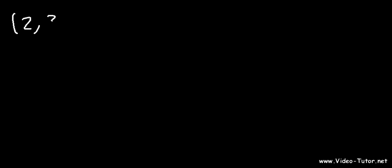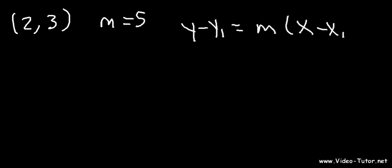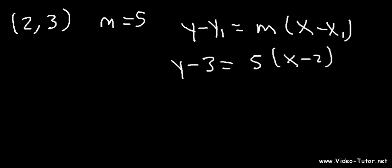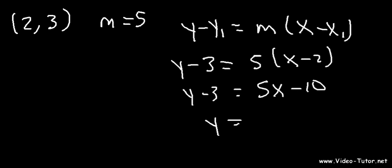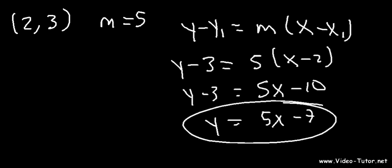So we have the point 2 comma 3 and the slope is 5. Let's use the point-slope equation: y minus y1 is equal to m times x minus x1. So y minus 3 is equal to 5 times x minus 2. Let's distribute the 5, so it's 5x minus 10. Then let's add 3 to both sides. Negative 10 plus 3 is negative 7. So this is the equation of the tangent line at x equals 2.